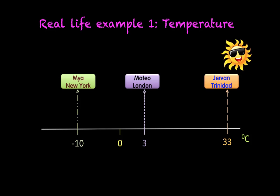That's right, if you said that's Jovan in Trinidad, you're absolutely right. Trinidad has the hottest temperature of the three areas.